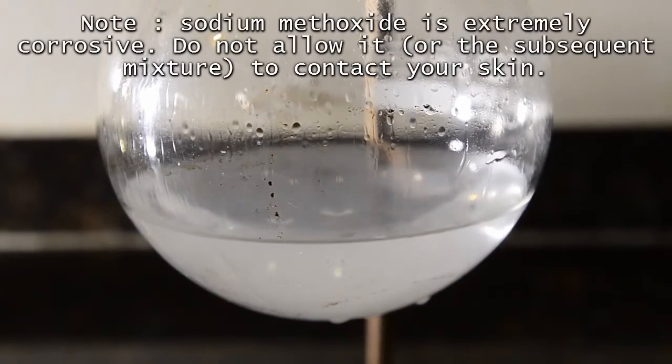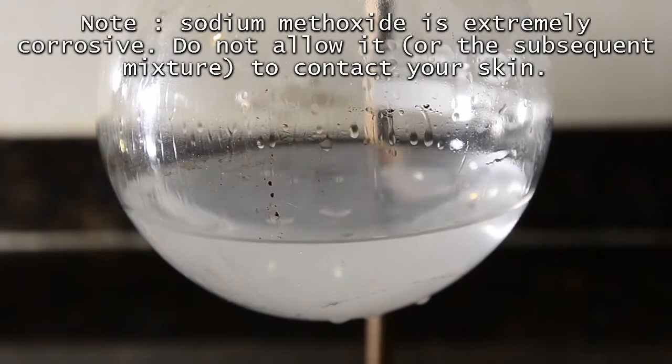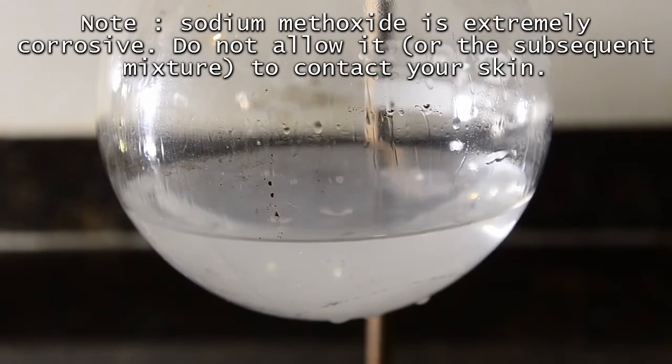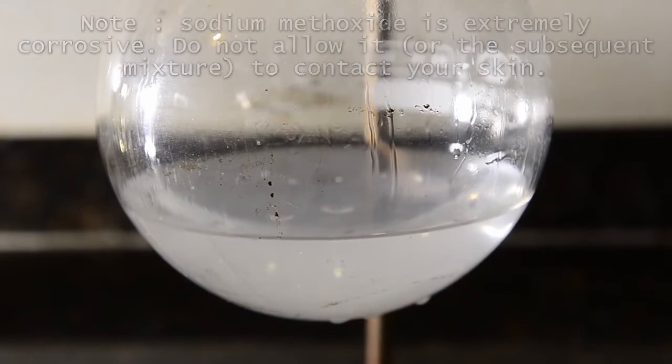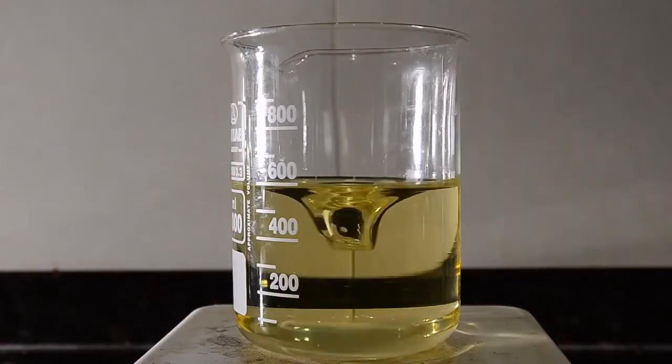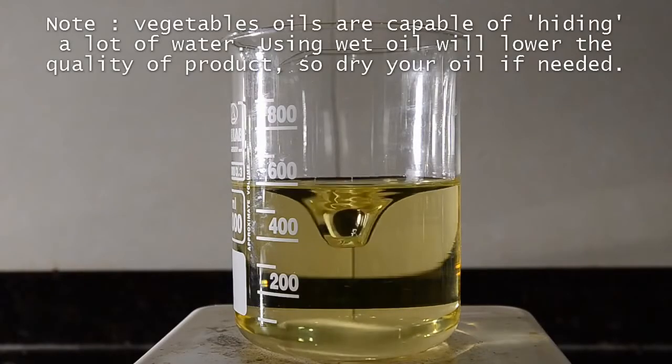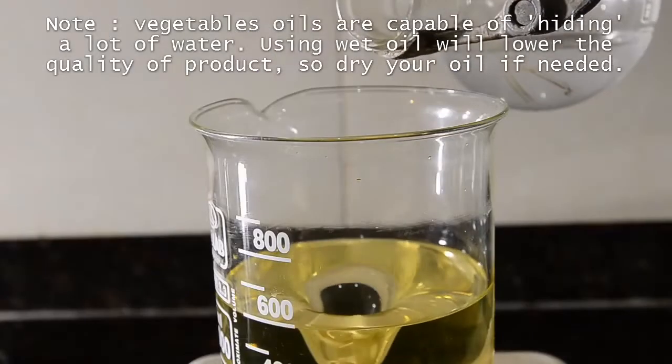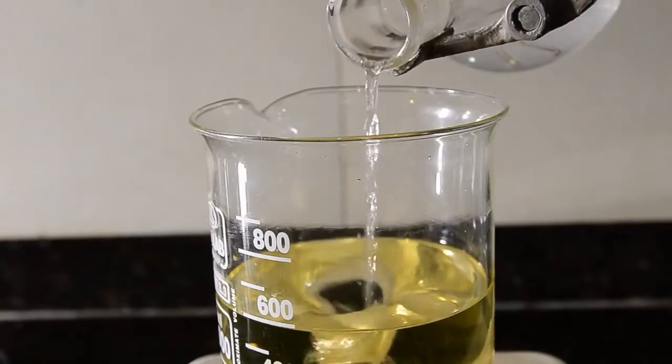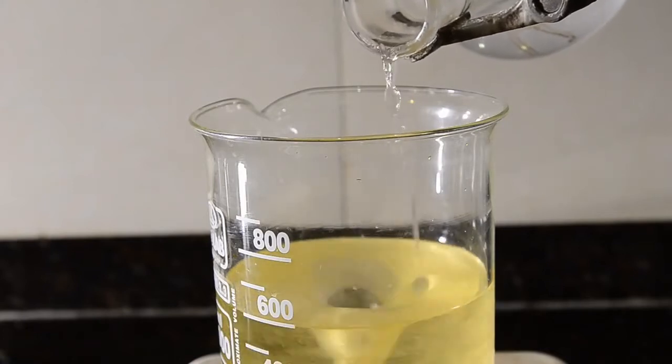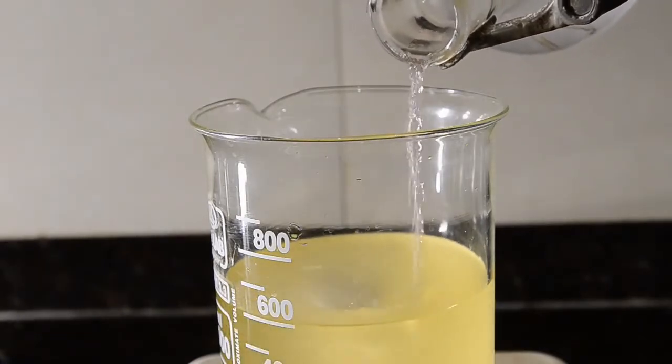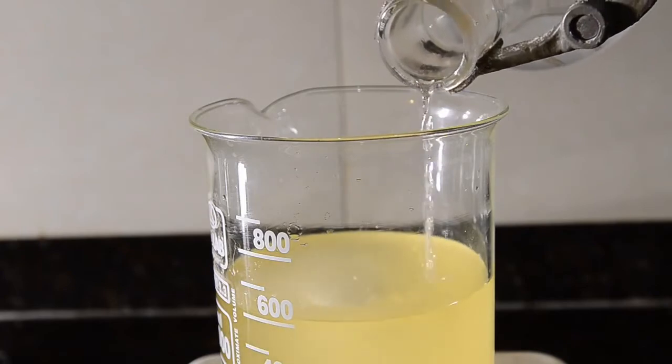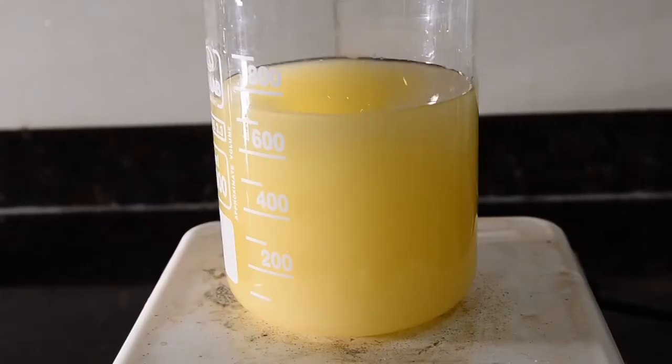A word of warning. This solution is extremely basic and you want to be very careful not to spill it or get it on your skin. Set up the beaker of oil with strong magnetic stirring and on a hot plate. Now add the hot sodium methoxide solution to the oil. Do this slowly so the mixture doesn't splash. Once it's all added you will have a cloudy looking mixture like this.